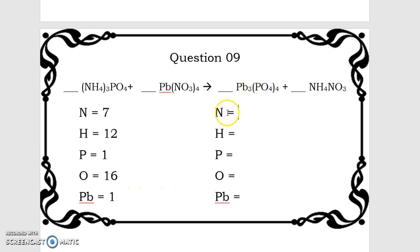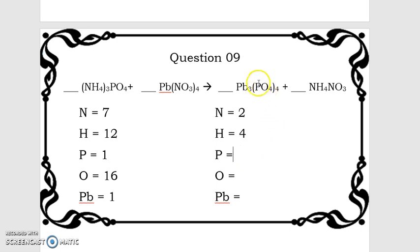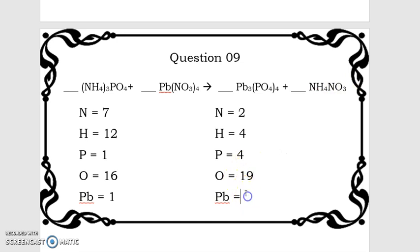On the product side, looking for the nitrogens first — I apologize, let's go back. I have 1 nitrogen here and 1 nitrogen here, so I have a total of 2. Hydrogens: I have 4. Phosphorus: I have 1 here times 4 for the parentheses is 4. Oxygens: 4 times 4 is 16, plus 3 more gives us 19 oxygens. And our lead — we have 3 of them.